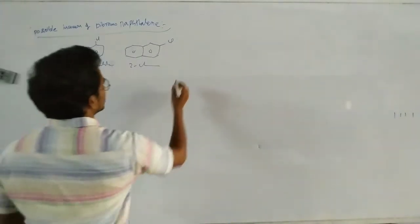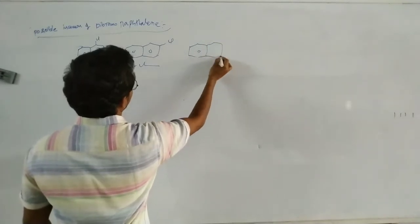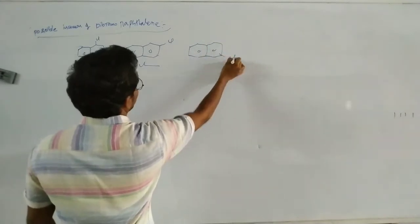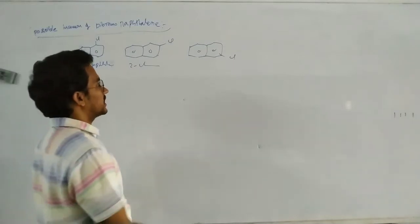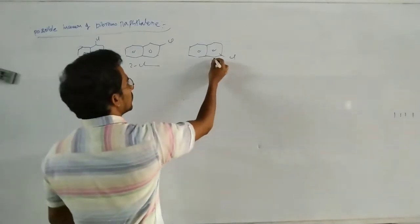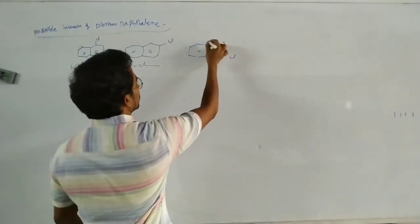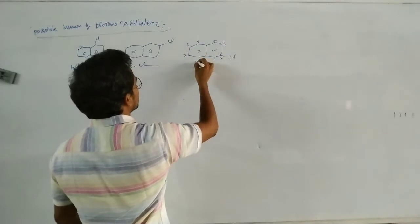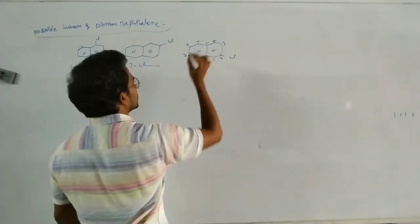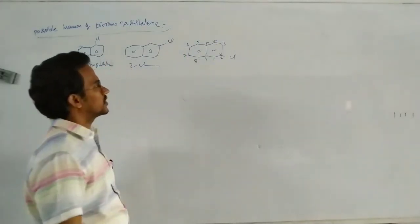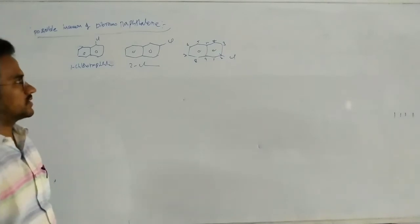There is no 3-chloronaphthalene. Why? Because the numbering goes 1, 2, 3, 4, 5, 6, 7, 8, 9, 10 — and the numbering is different for naphthalene.